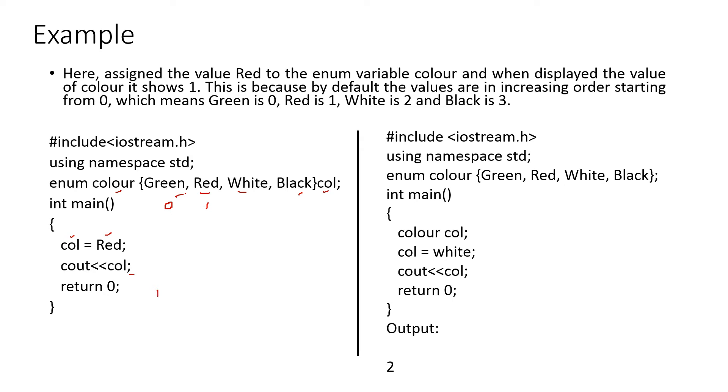Another way, the same thing you can represent. That is include iostream using namespace. enum color, green, red, white, black but here col is not there. Instead of writing here, it has been written over here. That is name of the enum, and this is the object.